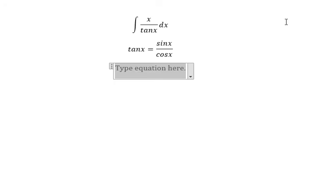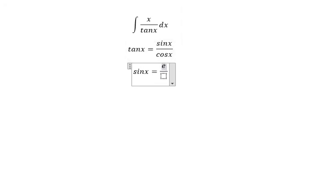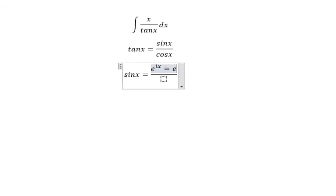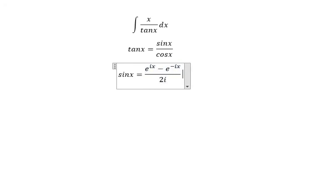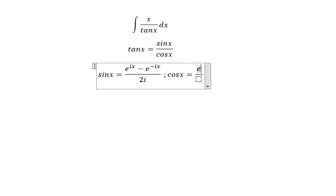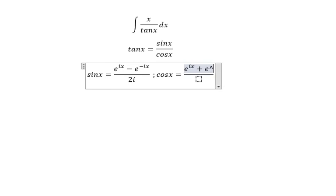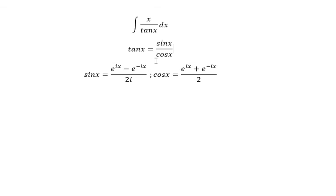sin s equals e to the power of is minus e to the power of negative is, over 2i. And we have cos s equal to e to the power of is plus e to the power of negative is, over 2. Now we will apply all these formulas.